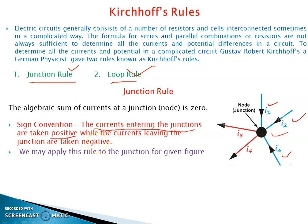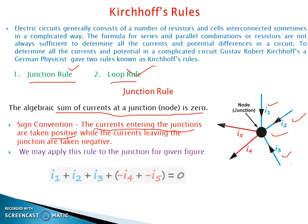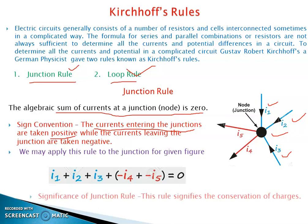Since I1, I2, I3 are incoming currents, they are positive. The algebraic sum of all currents meeting at the junction equals zero: I1 + I2 + I3 − I4 − I5 = 0. This rule is based on the conservation of charge.